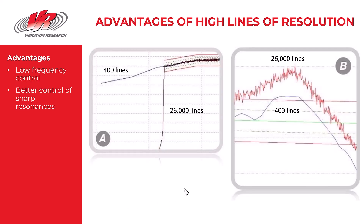Why would you want high lines of resolution? There are several advantages. One advantage is that you will have smaller bins, which means more bins and a more accurate plot when you're finished. That is particularly emphasized in picture B here, related to resonances.